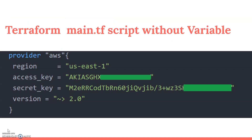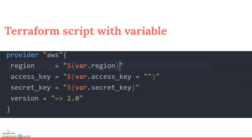Here is a sample where we have directly passed the access key and secret key in the provider details. This is not recommended because you are directly exposing your access key and secret key — it will be open to anyone who knows your code. We should hide these things using variables. Instead, we can reference variables for the region, access key, and secret key in the main script, keeping the variable definitions in a separate file.